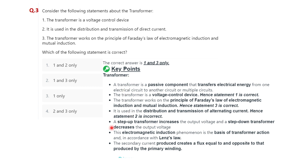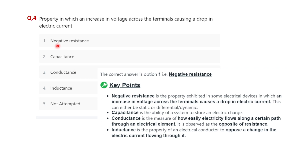Question four: which property describes an increase in voltage across the terminal causing a drop in electric current? Options are: negative resistance, capacitance, conductance, inductance. The correct option is negative resistance.